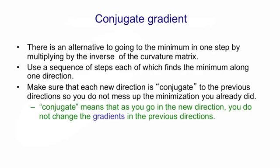It's a funny idea. It's like the idea of a twist in an error surface. A twist means when you go in one direction, you change the gradient in another direction. And a conjugate direction is one you can go in that in a sense doesn't have a twist. You go in that direction and the gradient in the first direction doesn't change.